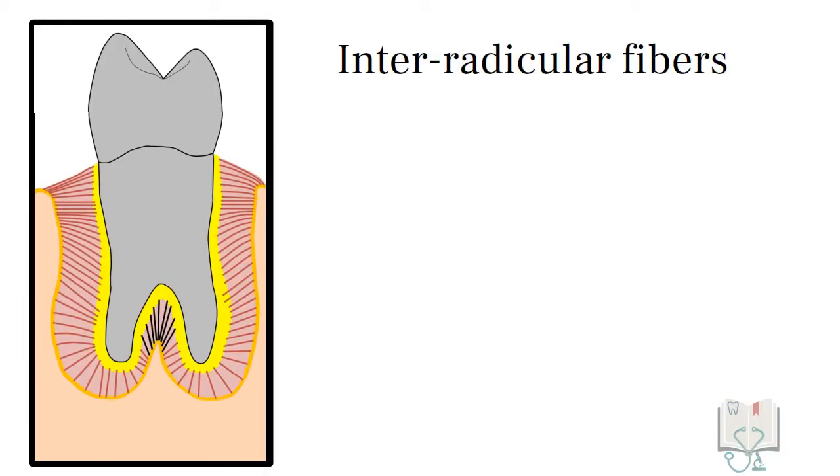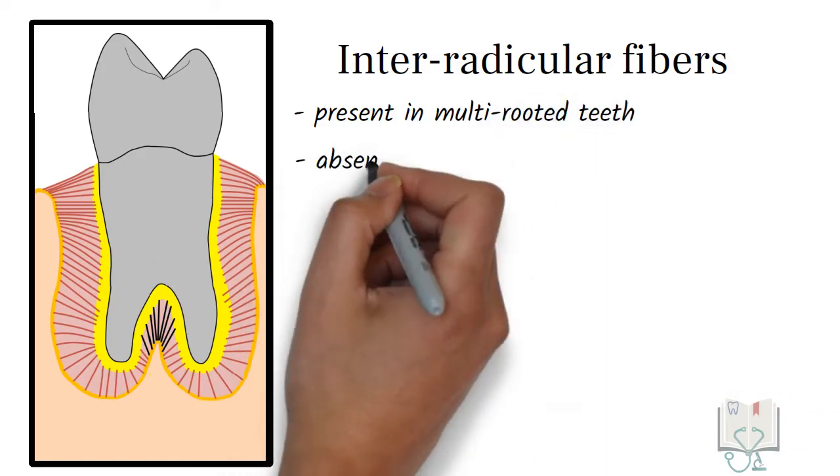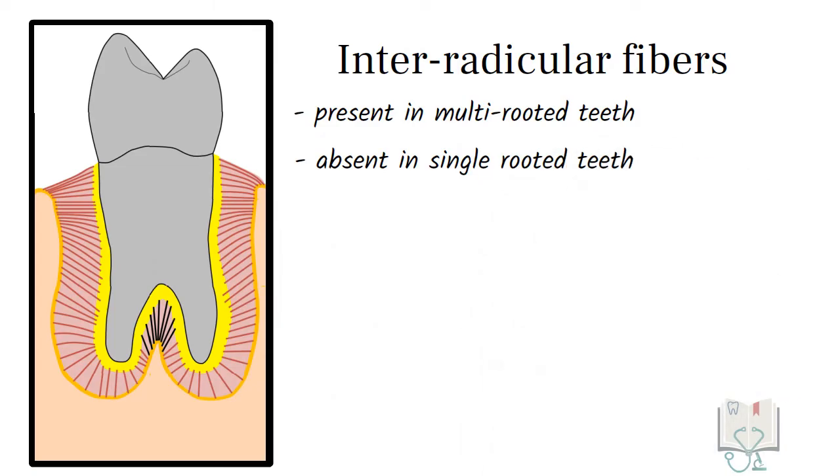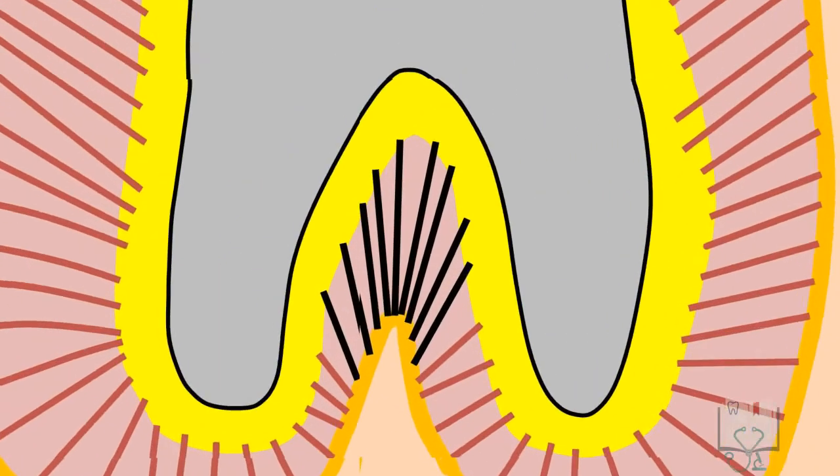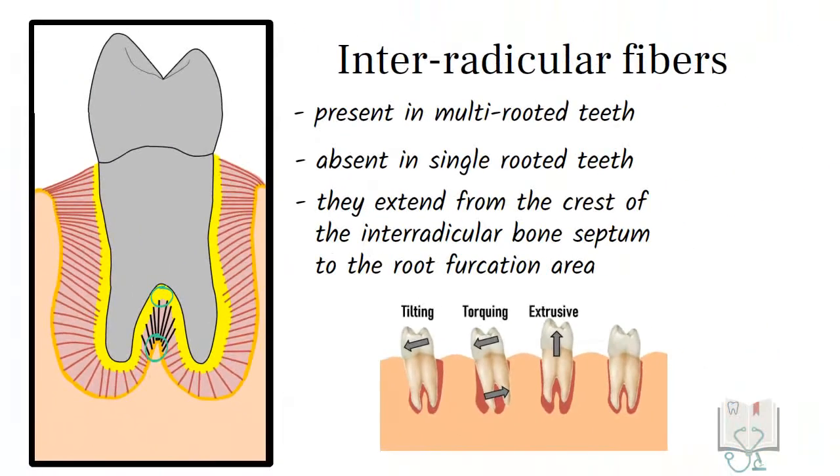The next group of principal fibers, inter-radicular fibers. These fibers are present only in teeth with multiple roots and absent in single rooted teeth. They extend from the crest of the inter-radicular septum to the furcation area of the root. These fibers resist tilting, torquing and extrusive forces.